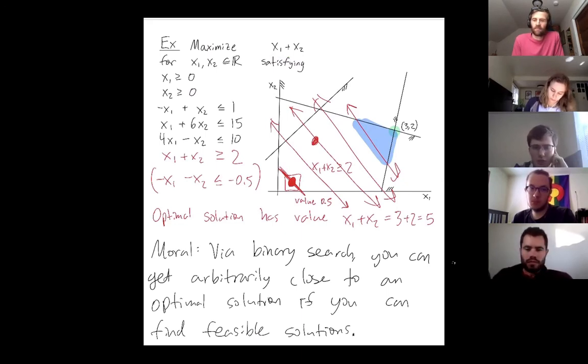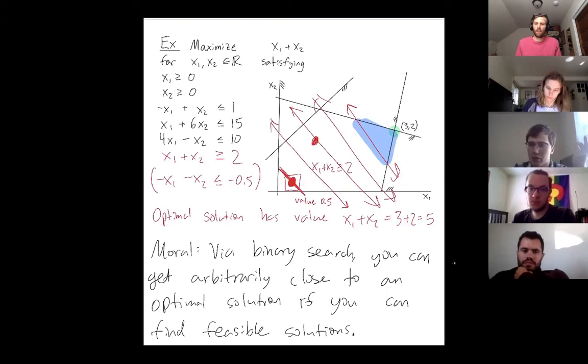So Henry, does this really get you as close as you want? It seems like doing this binary search, it gets us on the line of the solution, correct? But is it actually, or I guess you just have to take an intersection with the convex, with the parameters, with our other constraints to find where it would actually be, right? That's right.